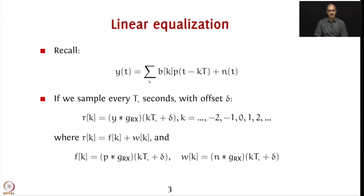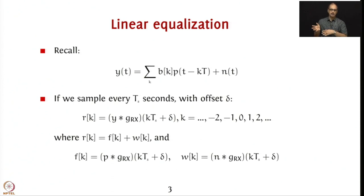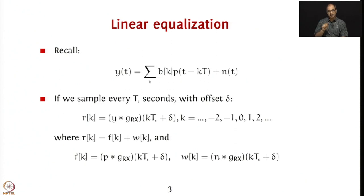So r_k = f_k + w_k, where f_k is the signal part: p convolved with g_rx evaluated at k*Ts + delta, and w_k is the noise part: n convolved with g_rx evaluated at k*Ts + delta. One key thing to remember is that n convolved with g_rx evaluated at k*Ts + delta need not be i.i.d. — they can be correlated. So that is something to keep in mind.